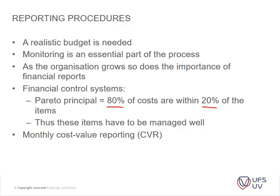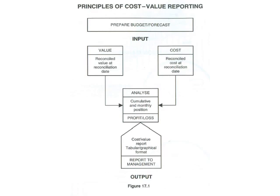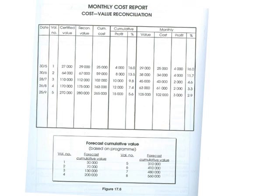Monthly cash flow reporting — this is what we're going to look at. You've got your inputs: you've prepared your budget, you've got your value, and you've got your cost. Reconciled value and reconciled cost at the reconciliation date — so you analyze your cumulative and monthly position. You either have a profit or a loss. Your cost report is formatted and reported to management. So it's basically an in-and-out report. We're not going to look at that in too much depth here, but we're going to look at an example.